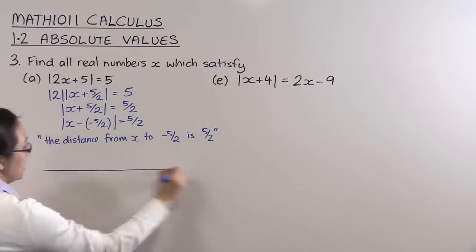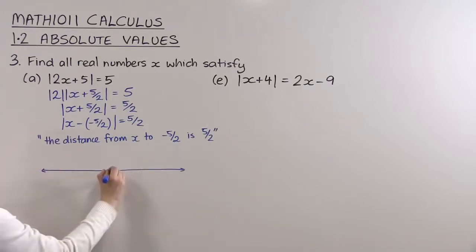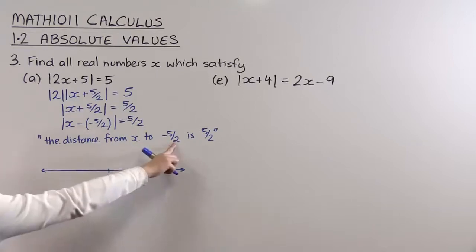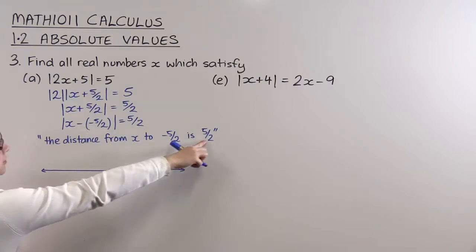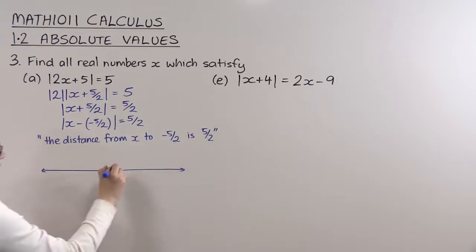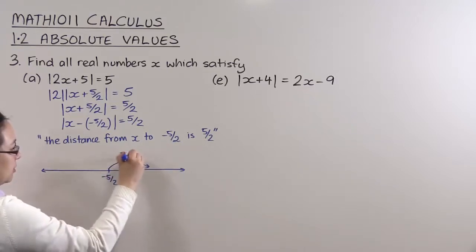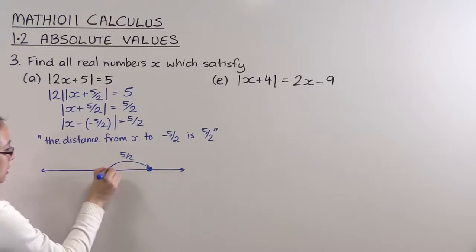So if I look at my number line here, here's minus 5/2. Now x to minus 5/2, it's 5/2 away. So x must be over here, or it must be over here. That's where x has to be. That's our solution here.